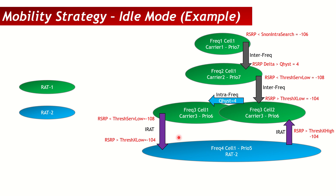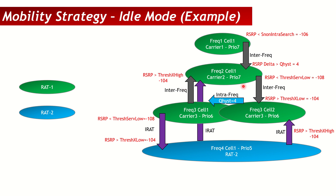A good mobility strategy must ensure there are no ping-pongs. All parameters must be consistent. Note that threshold-x-high for moving back to higher priority frequencies applies across all layers — it should always be above the threshold-serving-low of the respective frequency to prevent ping-pong. This is the basic concept of idle mode mobility.